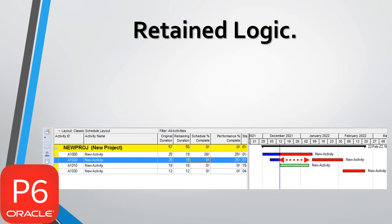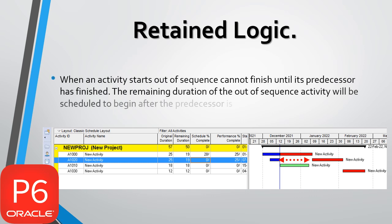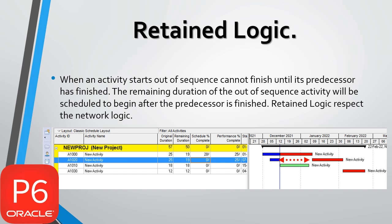Retained Logic: when an activity starts out of sequence, it cannot finish until its predecessor has finished. The remaining duration of the out-of-sequence activity will be scheduled to begin after the predecessor is finished. Retained Logic respects the network logic.